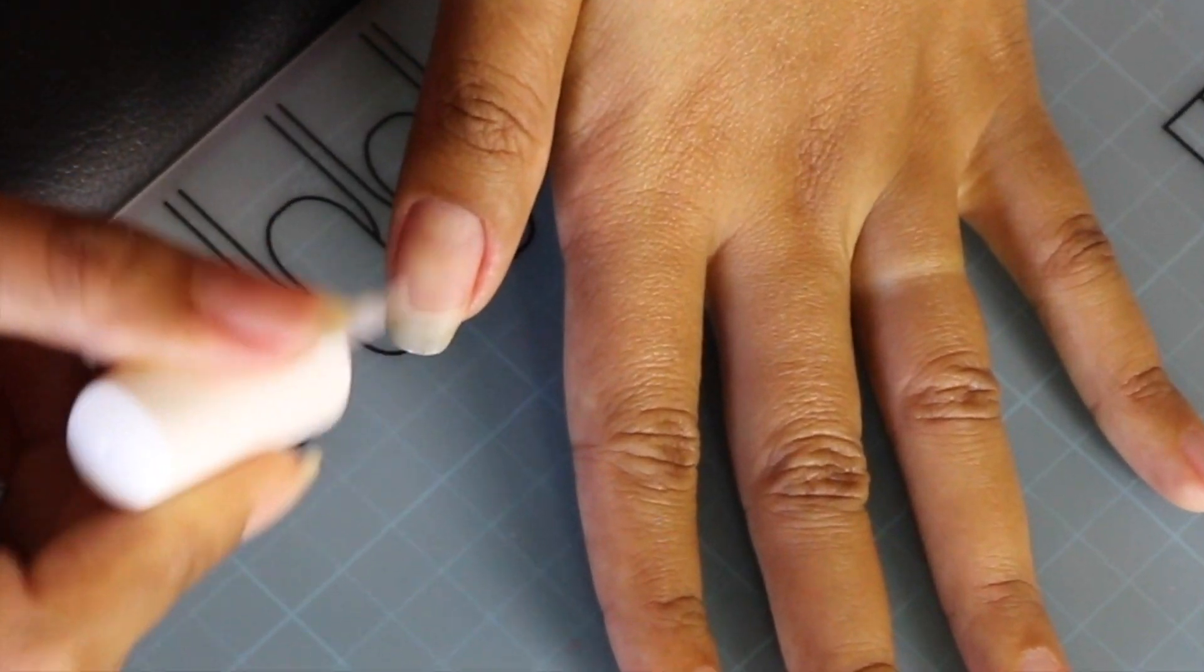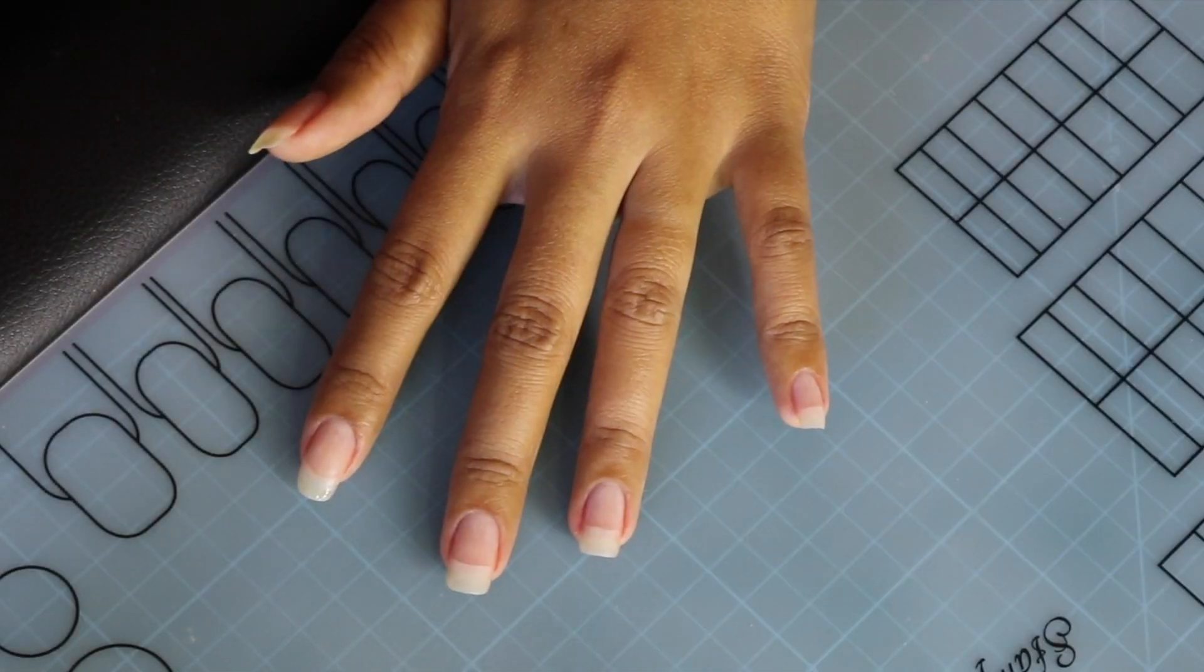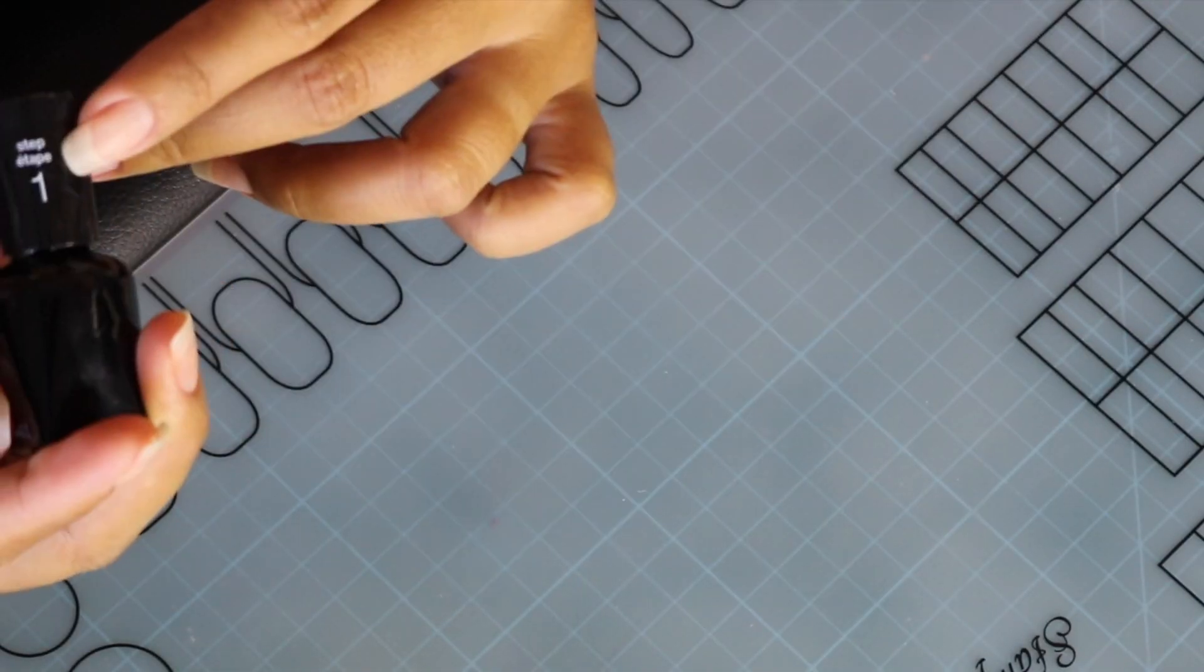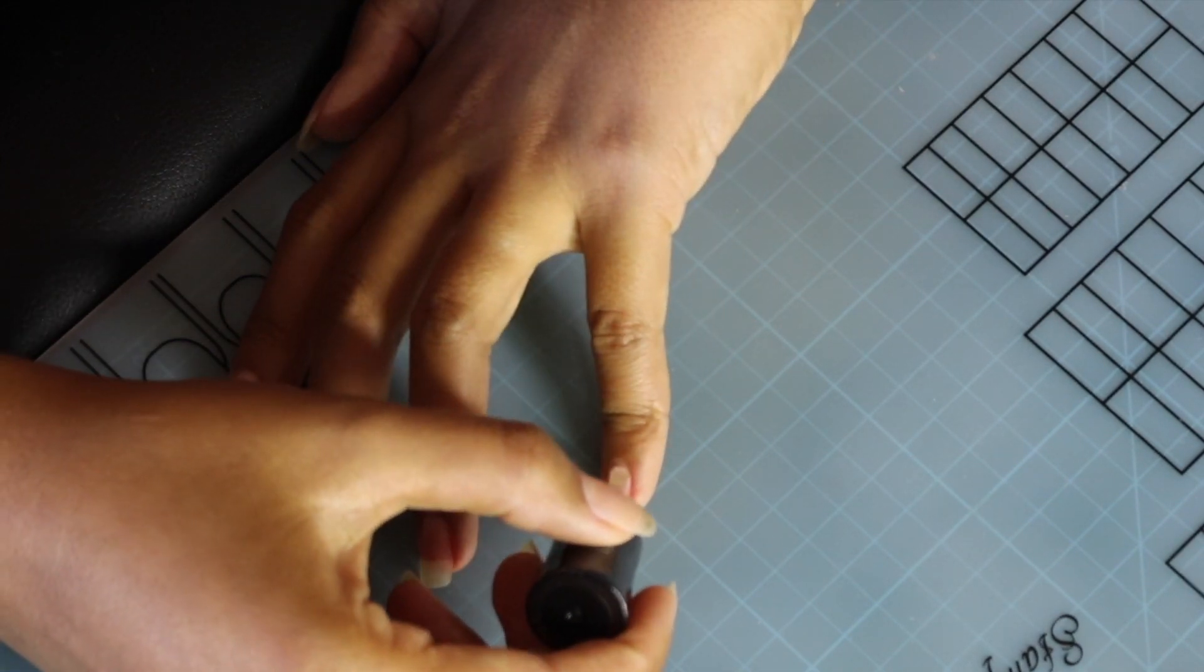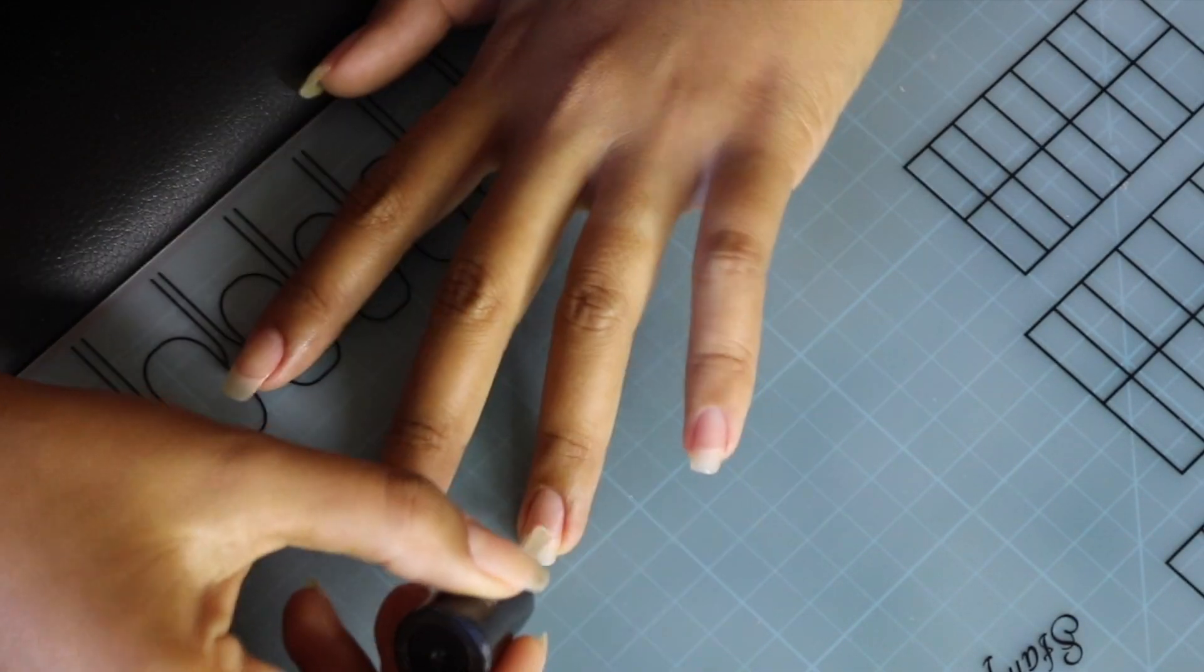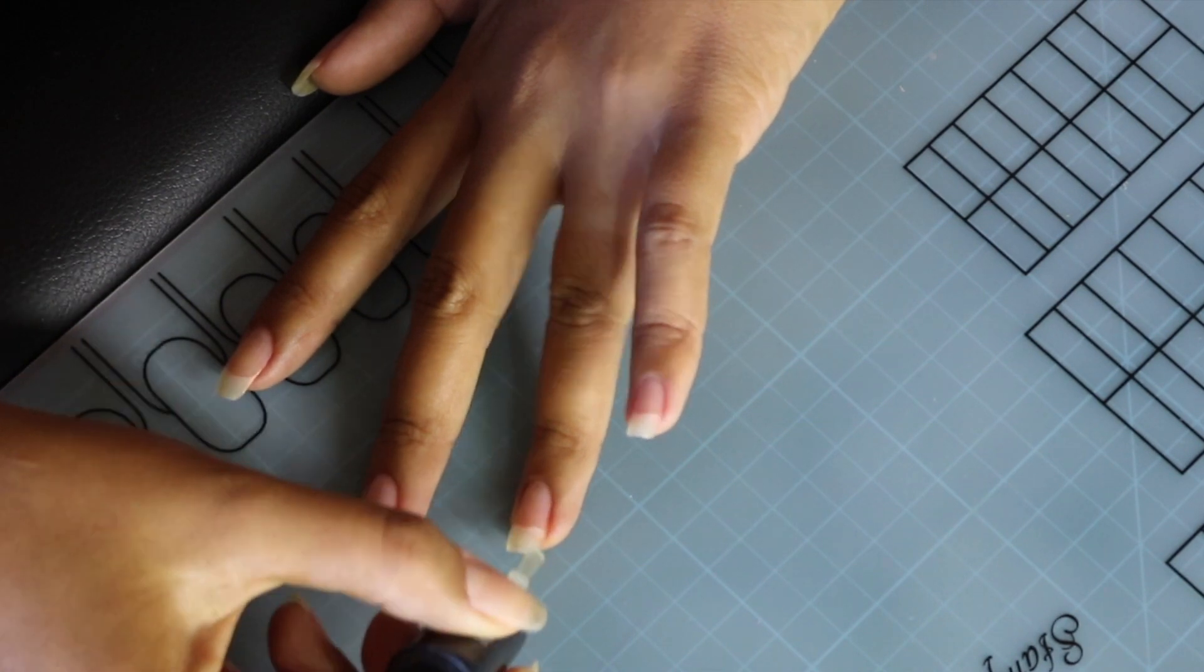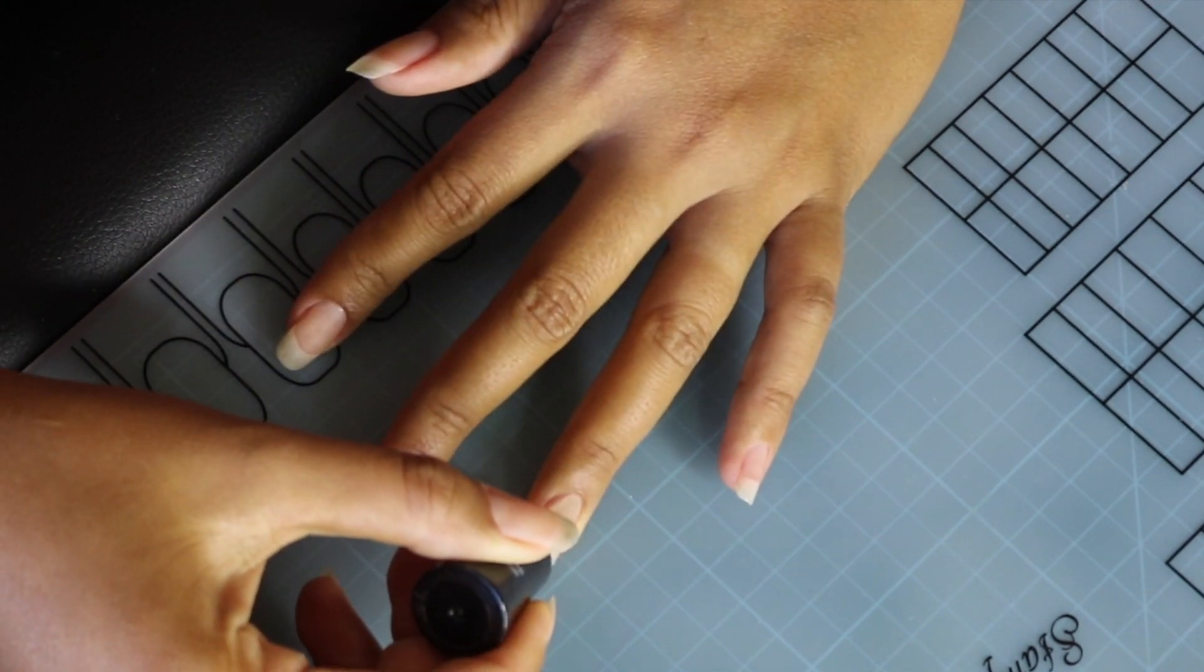Step 1: Base coat helps secure the gel polish to your nails. It helps the gel manicure adhere to the nail so the color won't transfer. Make sure you always put the base coat first.